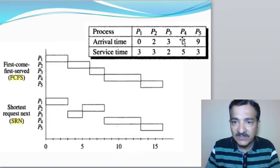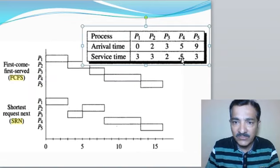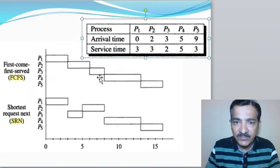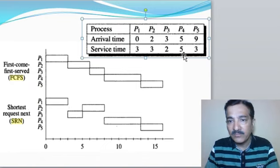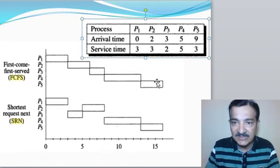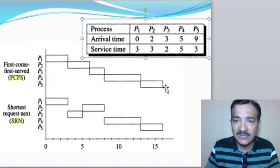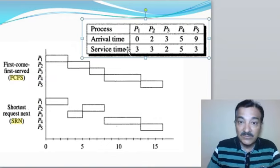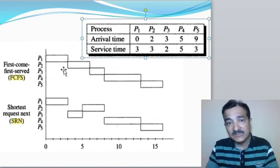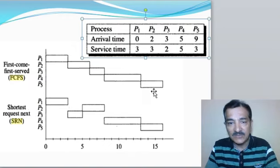From the 8th second, process 4 executes for 5 seconds. Process 5 will start executing at 8 plus 5 equals 13 seconds, and executes for 3 seconds, completing after 16 seconds. This is first come first serve — a very linear approach where whatever comes first executes first.